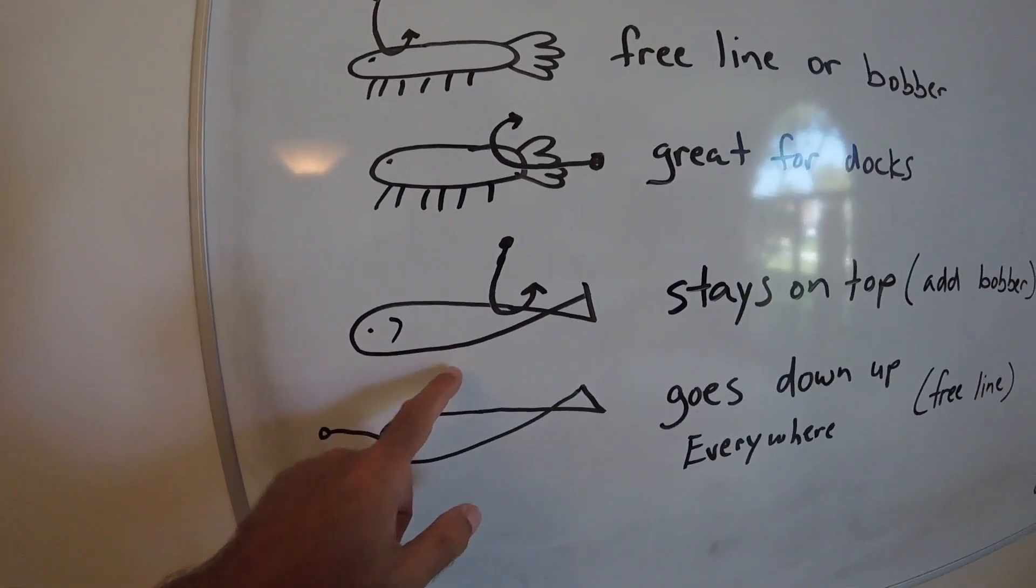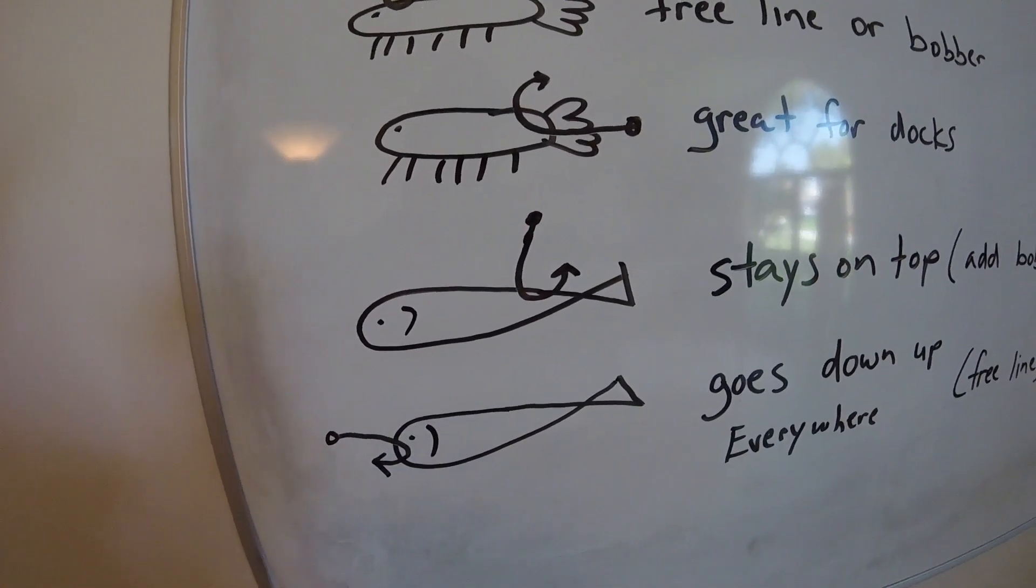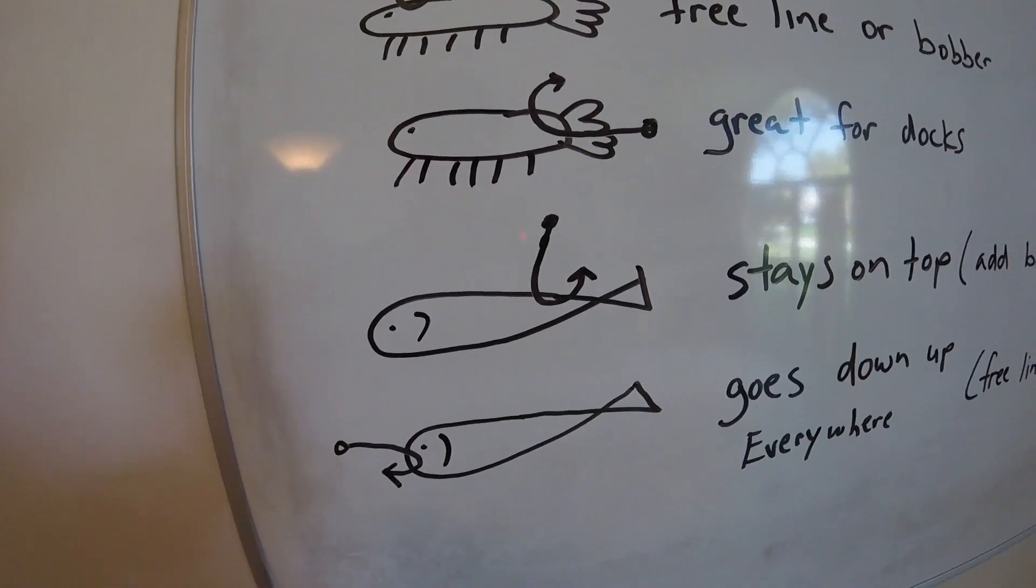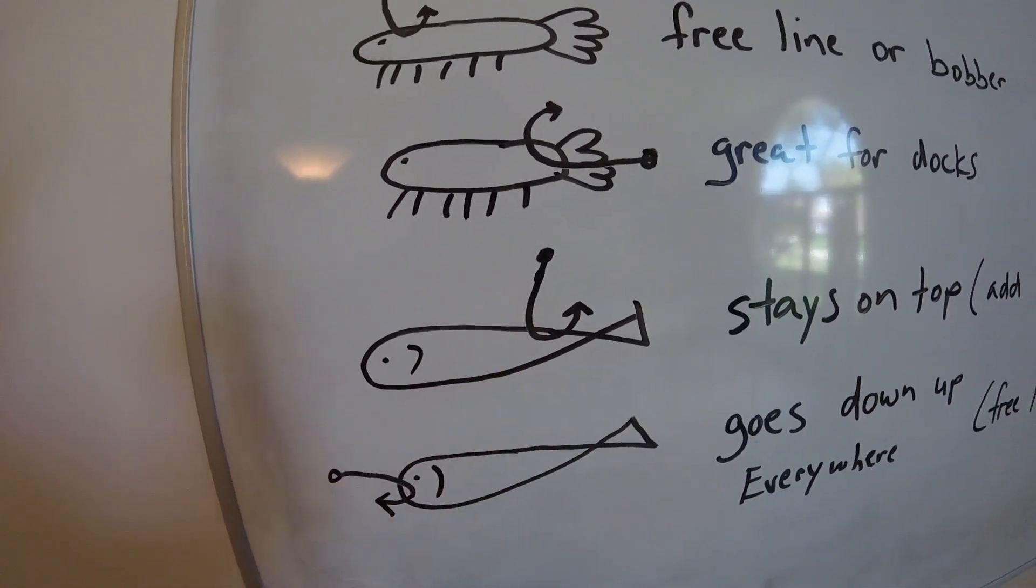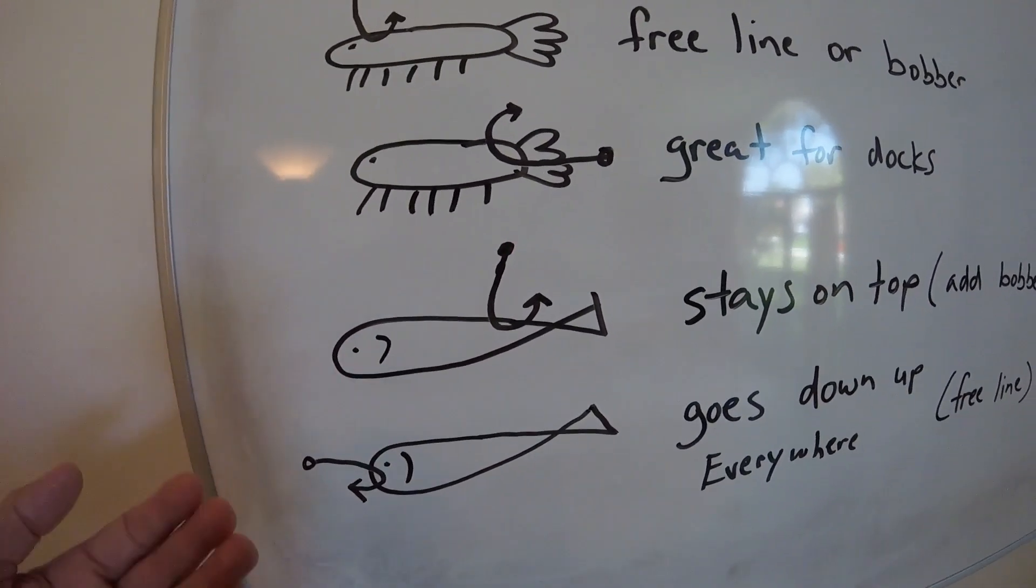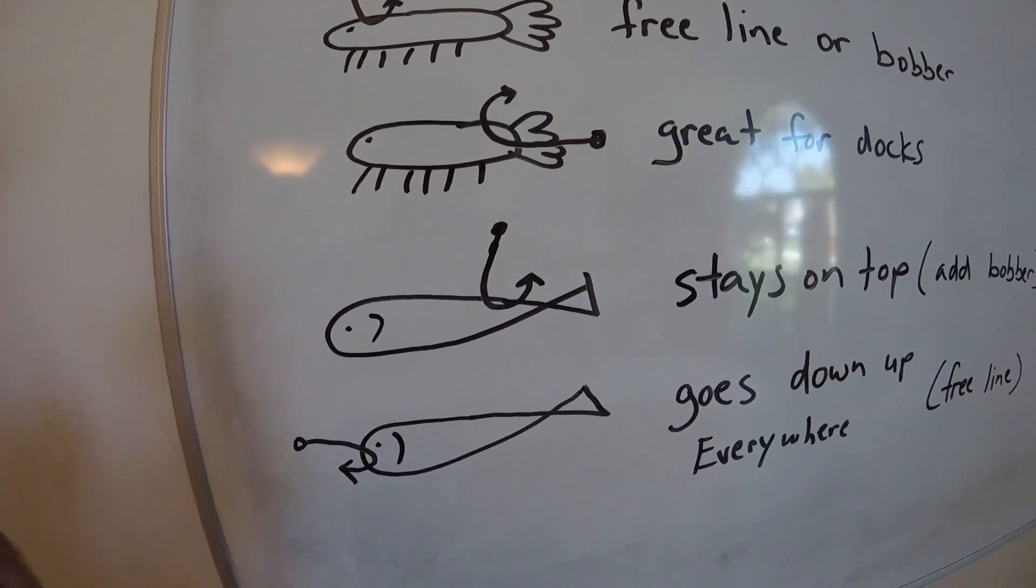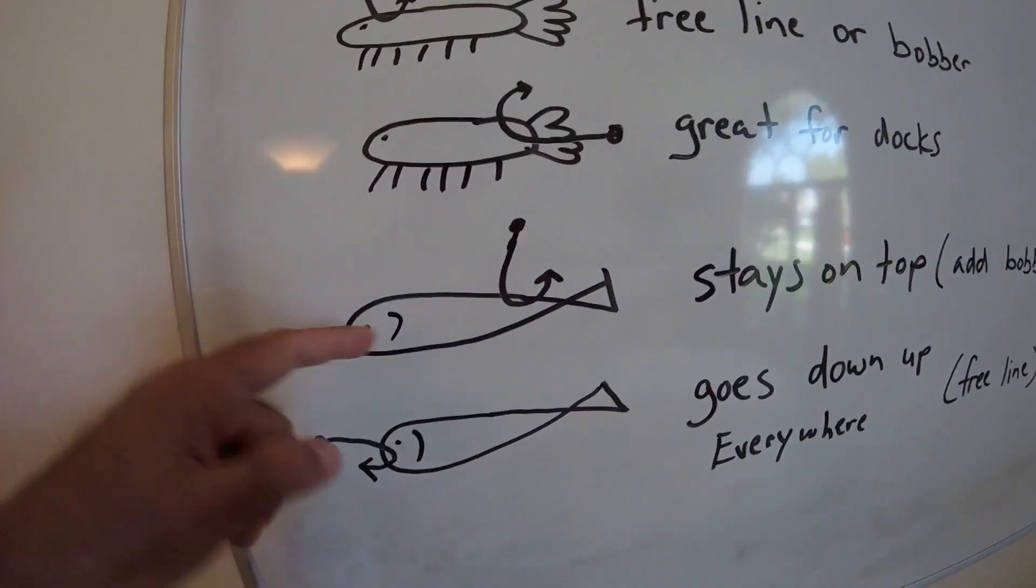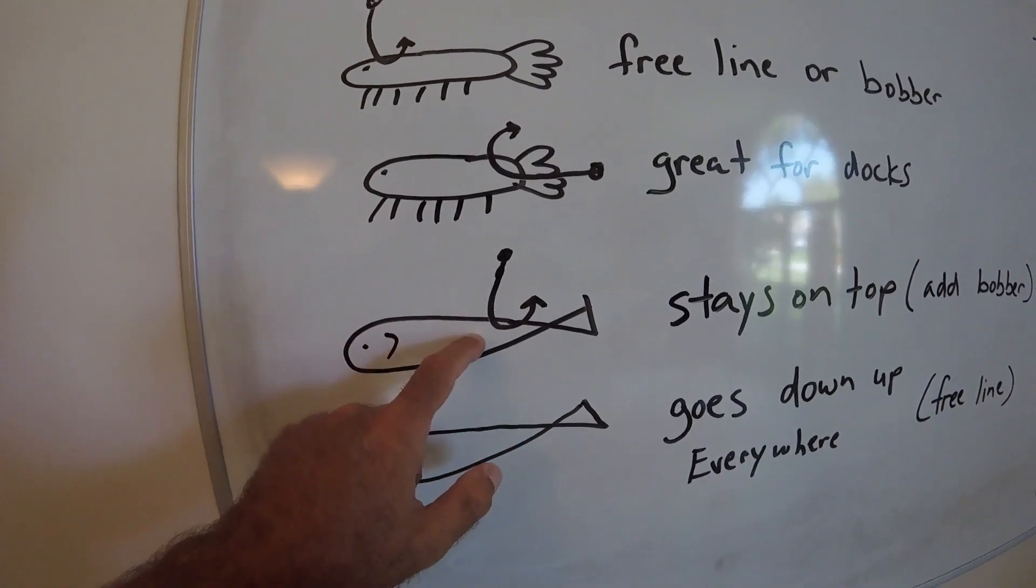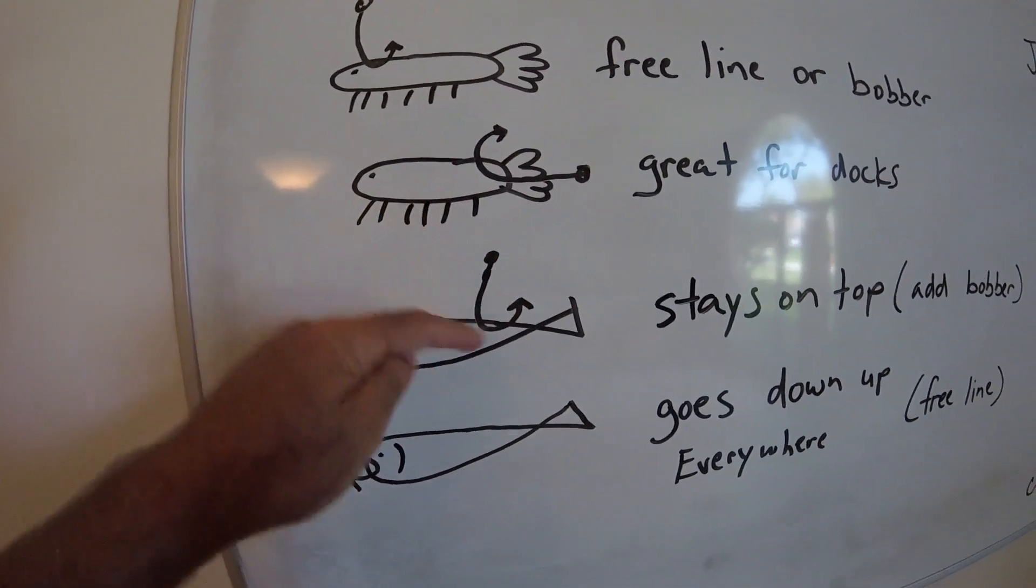When fishing with a mullet in really shallow water, I tail hook them. Some people hook them in the belly, but I feel it rips out too easily and you lose baits. When you tail hook them, they stay on top of the water for the most part. That works great free lining them or fishing with a bobber. I fish with a bobber quite a bit to slow down the mullet because they're very athletic and hard for snook and other predators to catch.